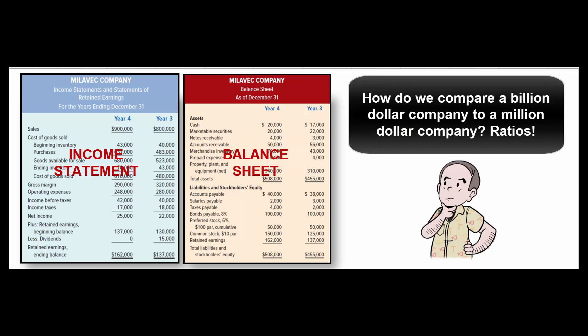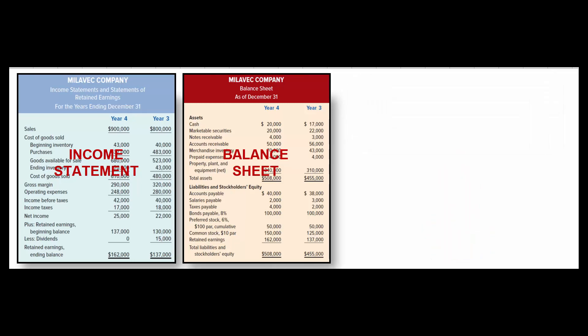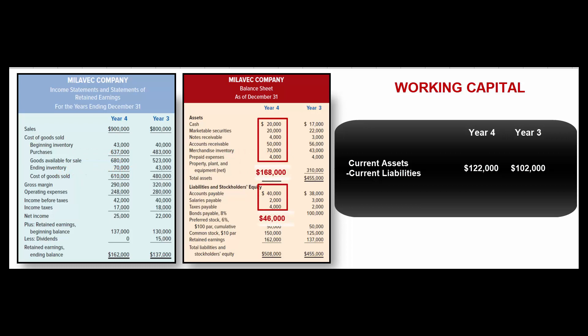How do we compare companies of different sizes — a billion-dollar company to a million-dollar company? We use ratios. Starting with liquidity ratios, let's look at working capital — sometimes called net working capital — which is current assets minus current liabilities. For year four: $168,000 minus $46,000 gives working capital of $122,000. For year three: $145,000 minus $43,000 equals $102,000, so working capital has increased.